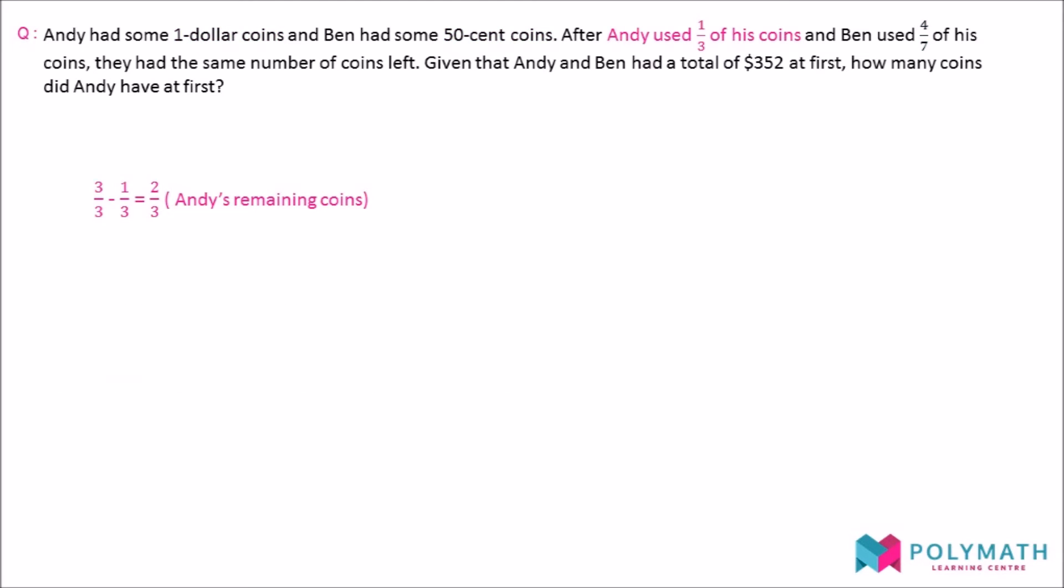Now, we shall start solving the question. Since Andy used 1 third of his coins, we can find the fraction of his remaining coins by subtracting 1 third from a whole. This will give us 2 thirds of his coins remaining.